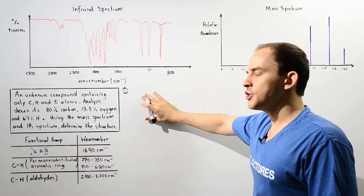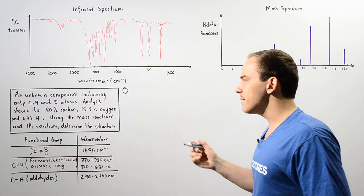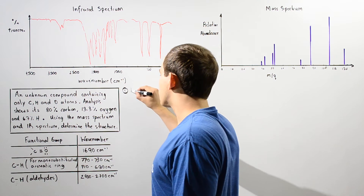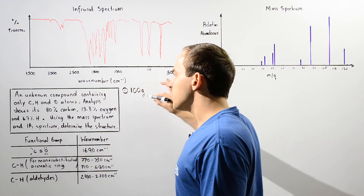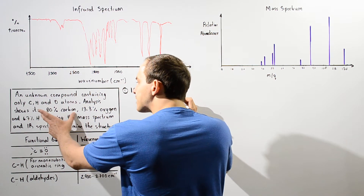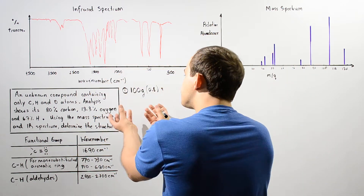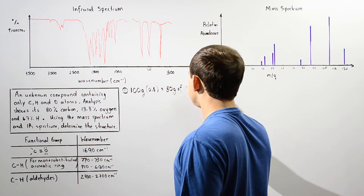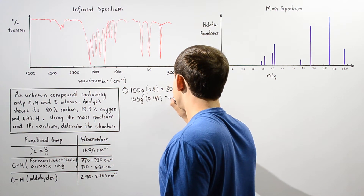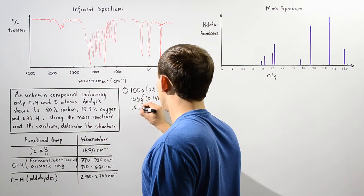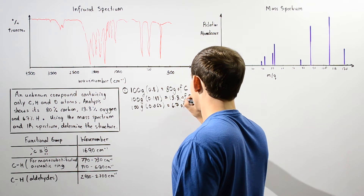Let's begin with step one: determining the empirical and molecular formula. Whenever we want to determine the empirical formula, we assume that the total mass of the compound is 100 grams — this is assumed, not the actual amount. If it's 100 grams, we multiply by the fractional quantity — not 80%, but 0.8 — giving us 80 grams of carbon. For oxygen, we follow the same procedure and find 13.3 grams of oxygen.